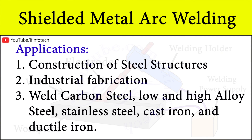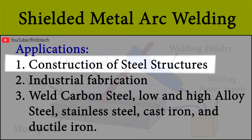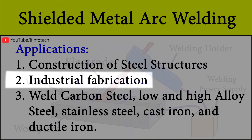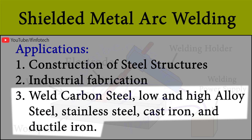Metal arc welding is used in the construction of steel structures and in industrial fabrication. It is often used to weld carbon steel, low and high alloy steel, stainless steel, cast iron, and ductile iron. It is less popular for non-ferrous materials such as nickel, copper, and their alloys, and in rare cases it is used for aluminium. Thank you.